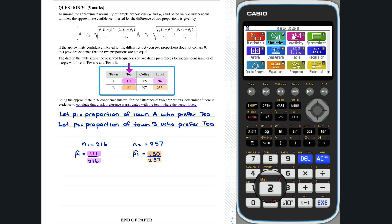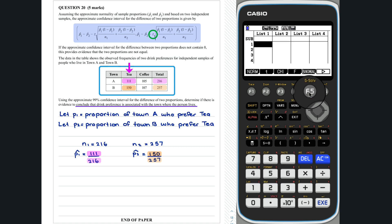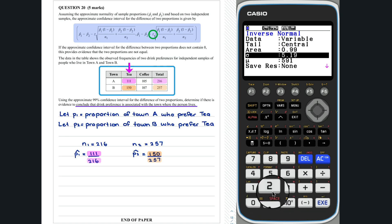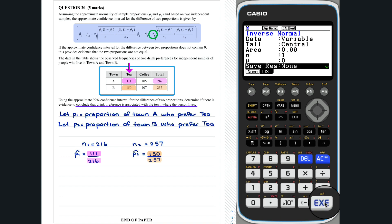We now have almost everything needed to be able to use the formula above. The last thing needed is the value of Z for a 99% confidence interval. This can be found using the standard normal distribution and the inverse normal option on the calculator. So, Z is equal to 2.576.